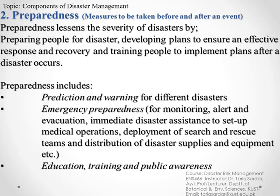Next is preparedness — how prepared we are, and what parameters can be taken for any kind of disaster. Preparedness involves preparing for a disaster by developing plans to ensure an effective response and training people to implement those plans. It specifically includes prediction and warning systems for different disasters, ensuring people in an area are informed and aware of any possible upcoming disaster event.